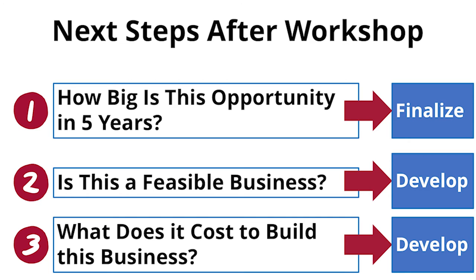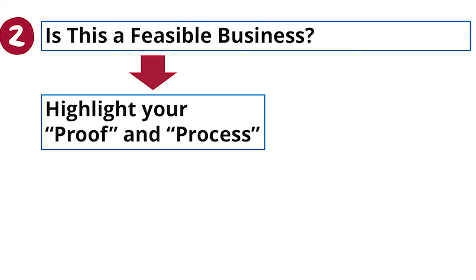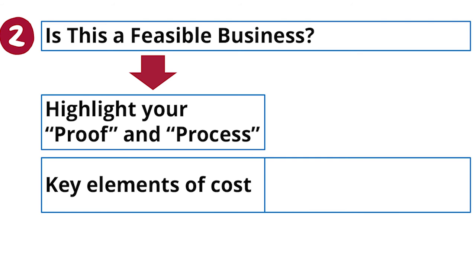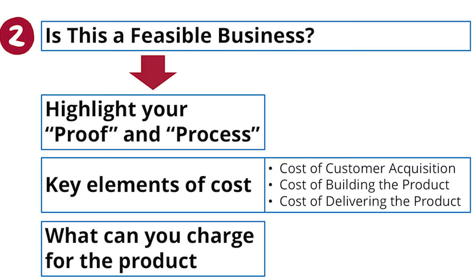After this workshop, think through how you demonstrate that this is a feasible business. Each business will have a different way of doing it. Go back to the way you thought about your process, the proof you already have, the tests you're going to run, and the data you have on the market. Look at the elements of cost — the cost of getting a customer, the cost of building a unit, the cost of making a delivery — and confirm these are within a certain range and that you can charge a price that works.